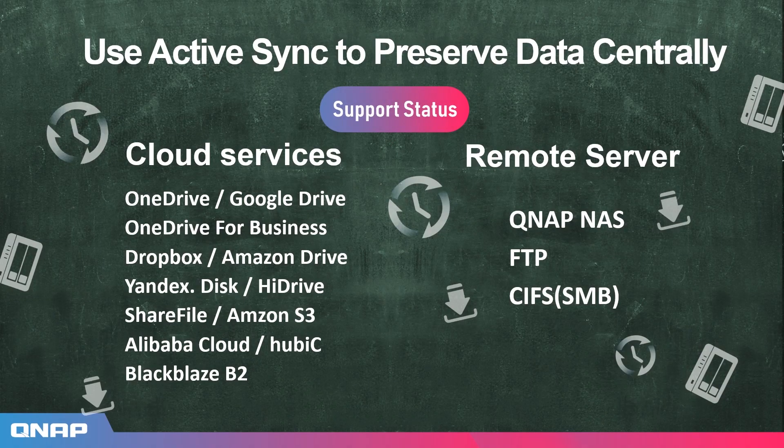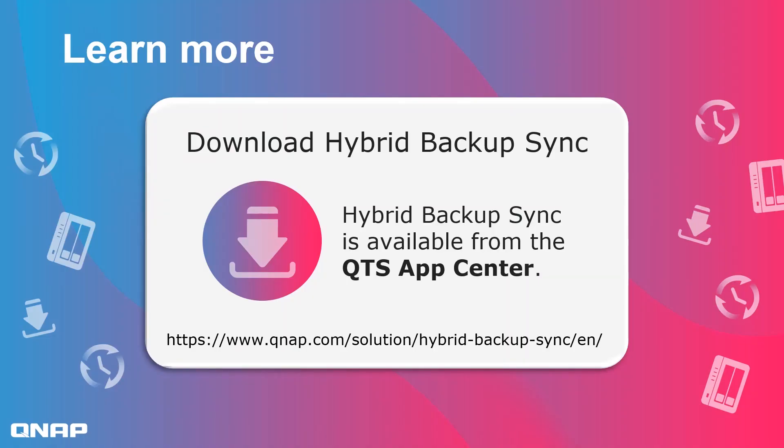Hybrid Backup Sync supports most storage destinations, including OneDrive, Google Drive, Dropbox, Amazon Drive, and much more. You can also recover backup data from remote servers and other cloud services for centralized data management. With these features and more, Hybrid Backup Sync allows you to easily and frequently backup your data. You can learn more by watching the video 'Hybrid Backup Sync: file storage and object storage services make hybrid cloud backup so easy.'